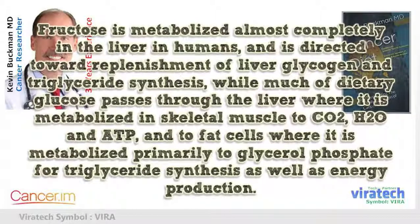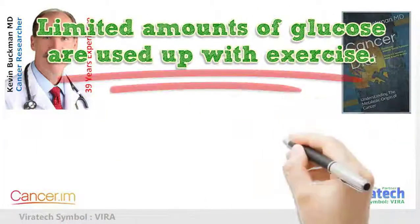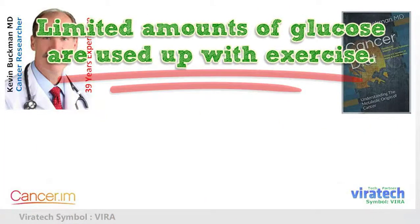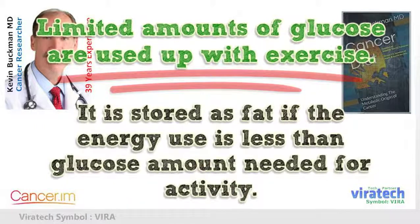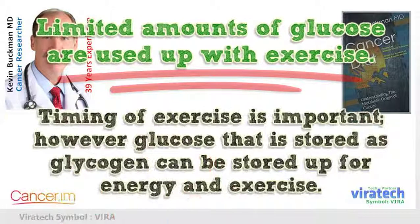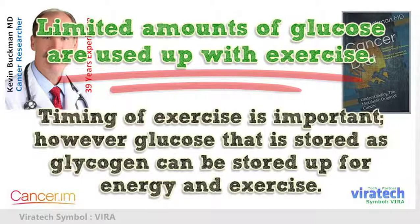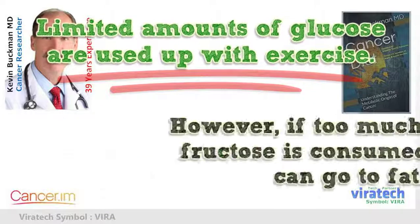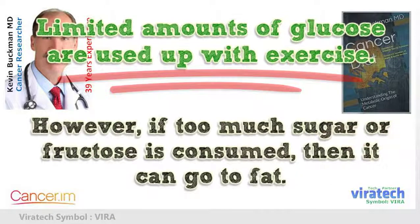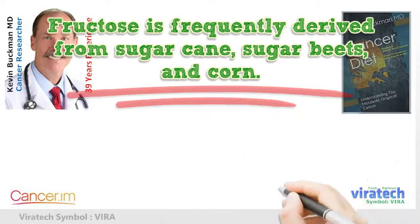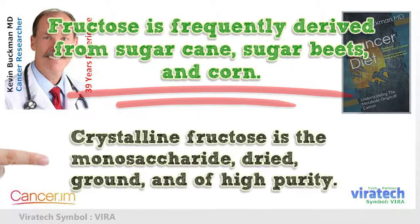Limited amounts of glucose are used up with exercise; it is stored as fat if energy use is less than the amount of glucose needed for activity. The timing of exercise is important. Glucose stored as glycogen can be held for energy and exercise, but if too much sugar or fructose is consumed, it can be converted to fat.